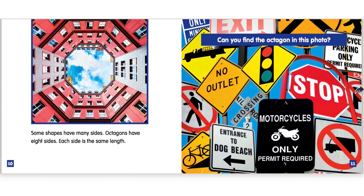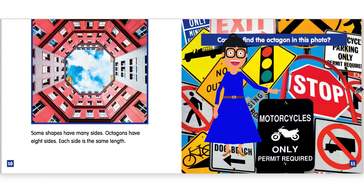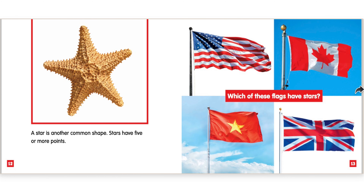Some shapes have many sides. Octagons have 8 sides. Each side is the same length. Can you find the octagon in this photo? A star is another common shape. Stars have 5 or more points. Which of these flags have stars?